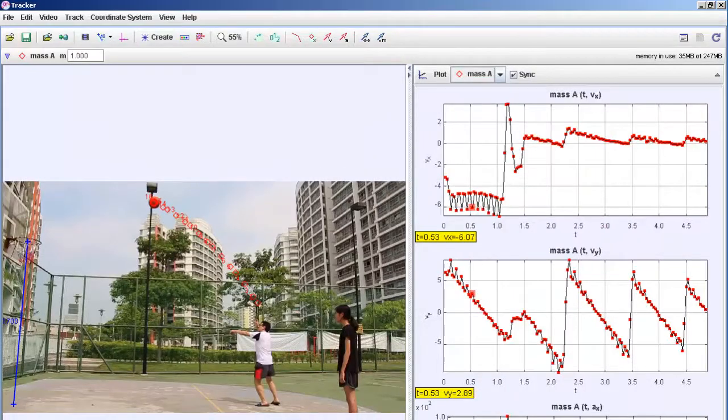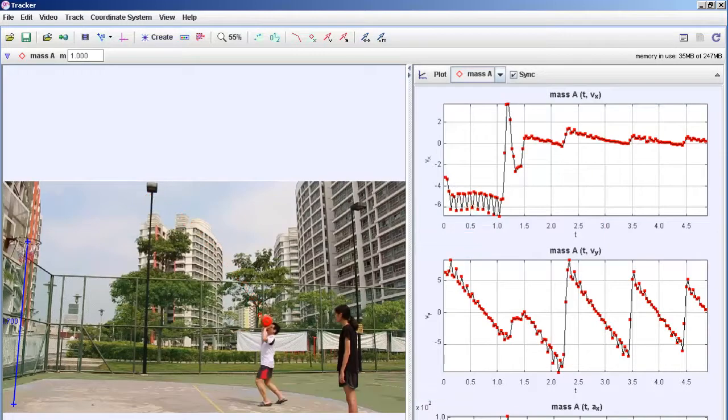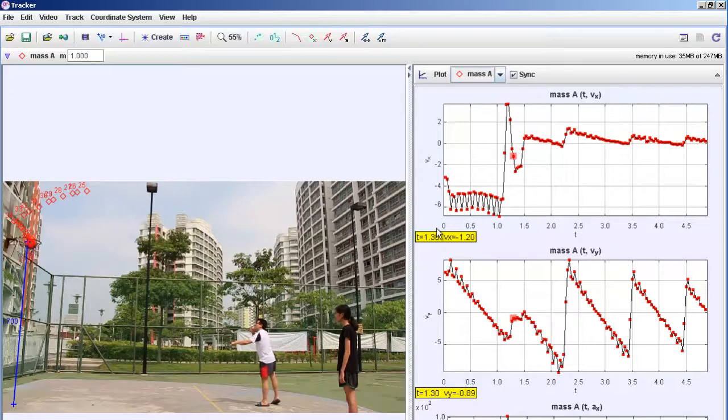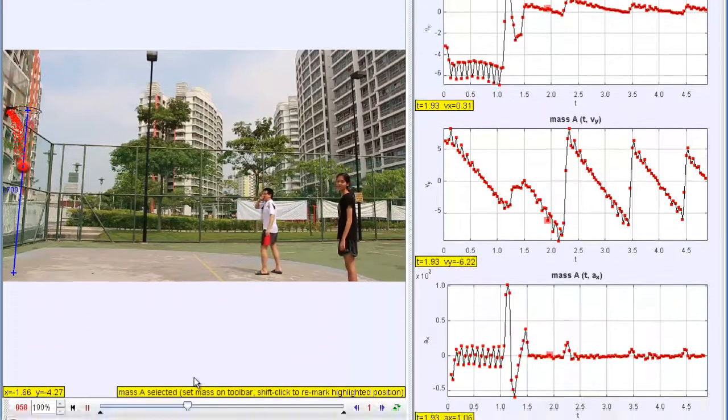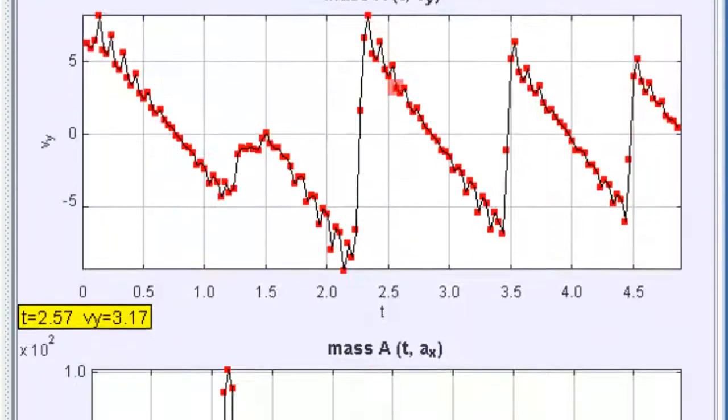This is a video tutorial in Tracker 4.85 to show how you can interpret some of these motions in the right panel, such as the velocity in the x, velocity in the y, and ax.